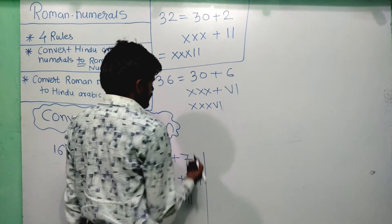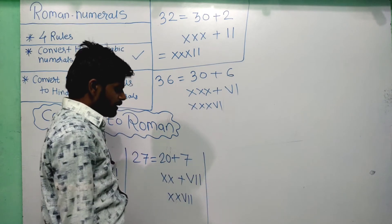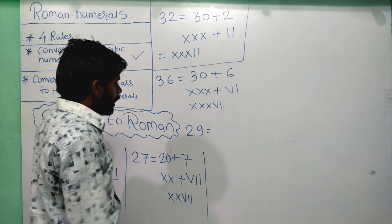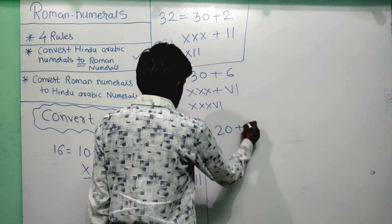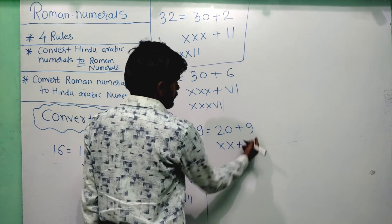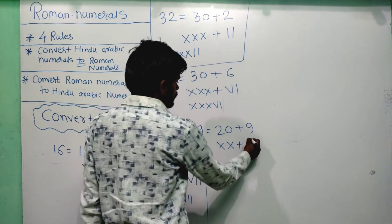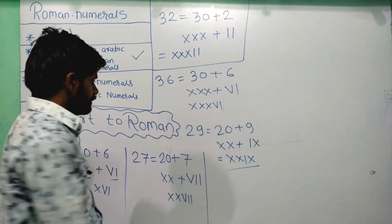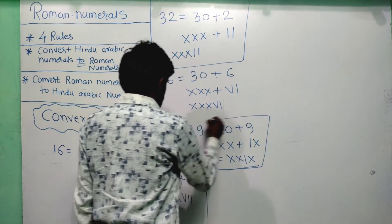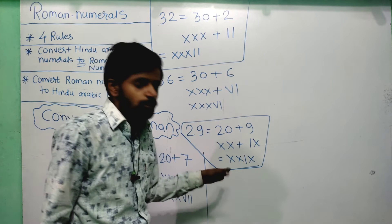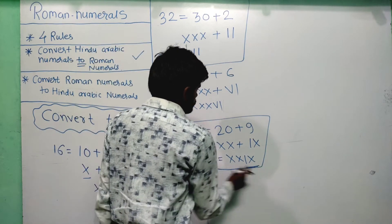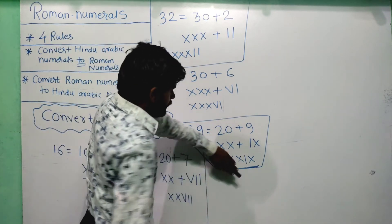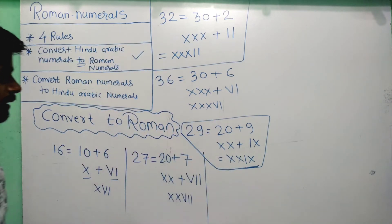For 29: expand as 20 plus 9. Write XX for 20. For 9, use combinational subtraction: IX. Combine: XXIX equals 29. Note: if it were XIX, that would be 19 — but here we have two X's, so it is 29.